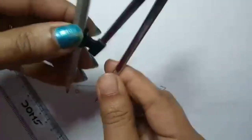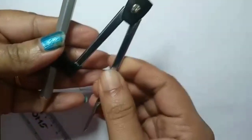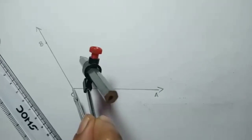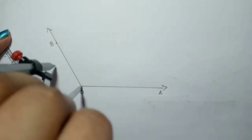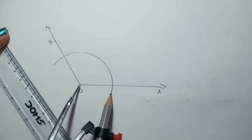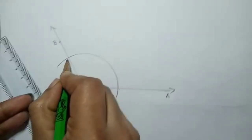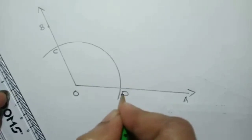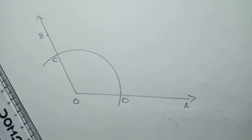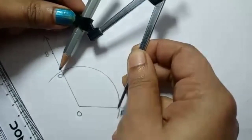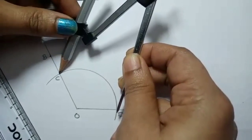any radius. See, I have just opened up my compass. So any radius you can take. So here, I am getting two intersecting points that is C and D. I already told you all these things before. I hope all of you remember this.